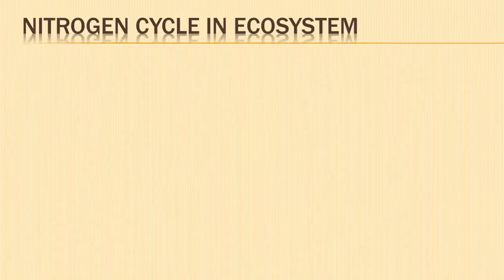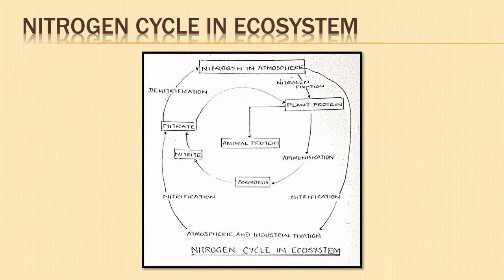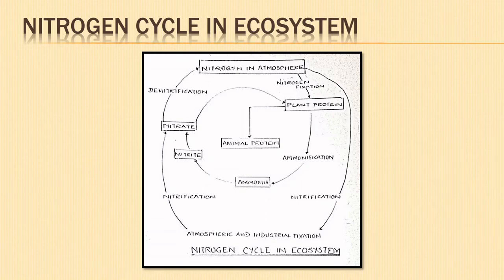Let us summarize the nitrogen cycle in the ecosystem. The atmospheric nitrogen is fixed by various methods into usable forms for plants and organisms. It gets assimilated in the protoplasts of green plants and finally converted into plant proteins. Animals derive their nitrogen requirement from plant proteins. Various processes like ammonification and nitrification take place with the help of bacteria, resulting in the formation of ammonia, nitrite, and nitrate compounds. Denitrifying bacteria bring about denitrification and release free molecular nitrogen into the atmosphere, thus maintaining a balance in the ecosystem.